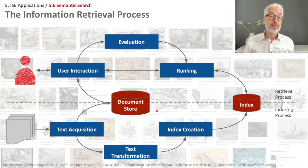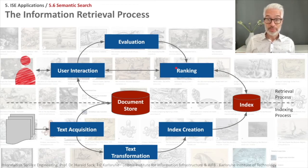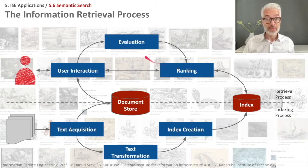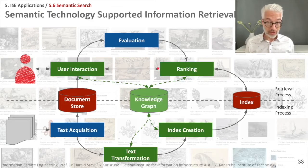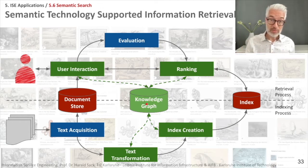You have an index in a document store, which can then be asked by the user with a query via a user interface. And you have this user interaction, which of course is also evaluated with the search engine and influences in the end the ranking — the order in which search results appear or are preferred. This is the retrieval process above that line. If we are dealing with semantic technologies, then besides the document store and the index, we also have to deal with a knowledge graph that incorporates knowledge represented within the documents plus back-end knowledge, external knowledge.